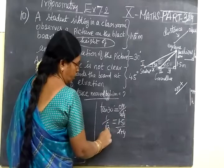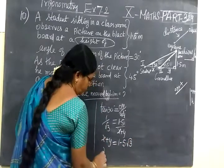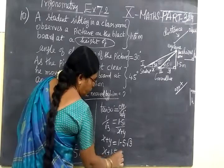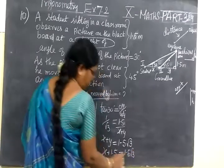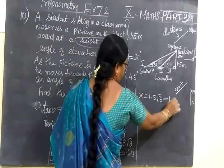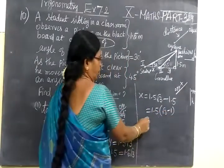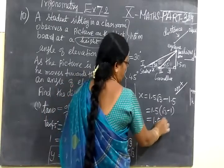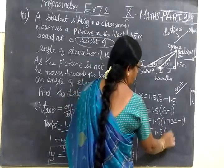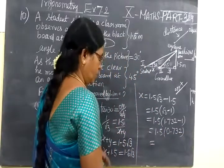So tan 30, 1 by root 3. Cross multiply. S plus Y equal to 1.5 root 3. And remove the Y value. Y value is 1.5. Equal to 1.5 root 3. S is equal to 1.5 root 3 minus 1.5. You take 1.5 common. So root 3 minus 1. Root 3 value 1.732 minus 1 equal to 0.732.